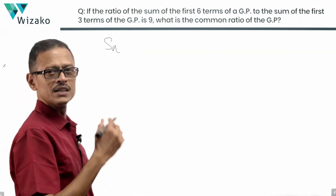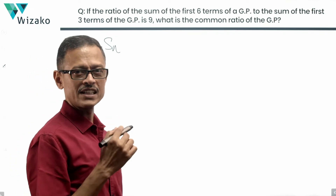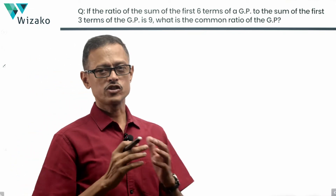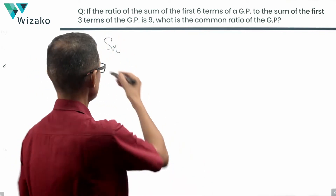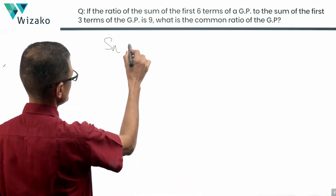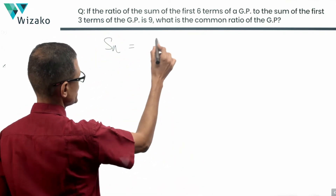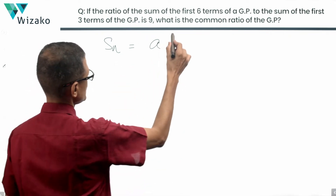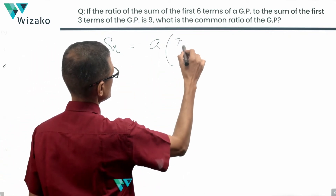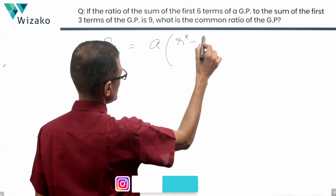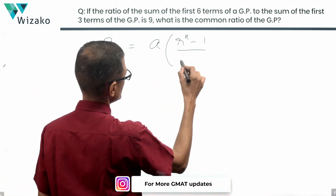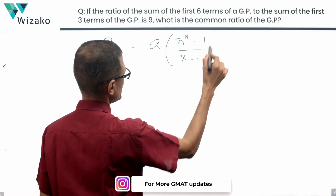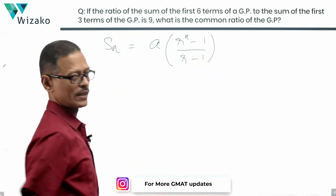Step one: the formula to compute the sum of the first n terms of a geometric progression — Sn is equal to a, which is the first term, times (r raised to the power of n minus one), divided by (r minus one).